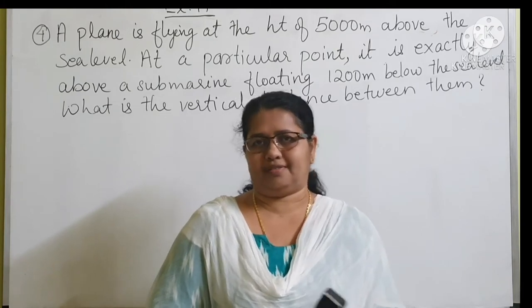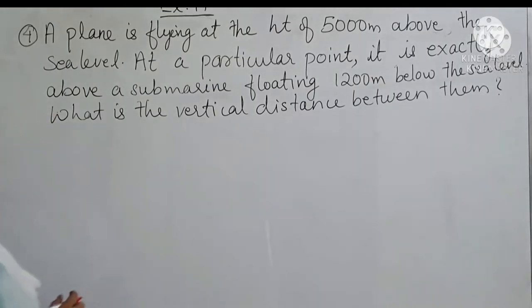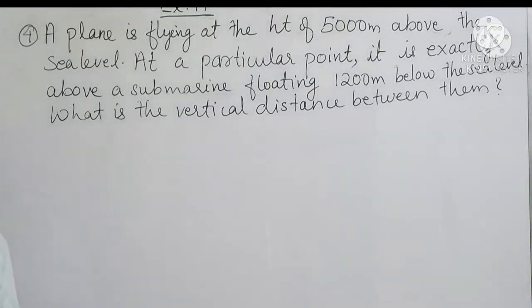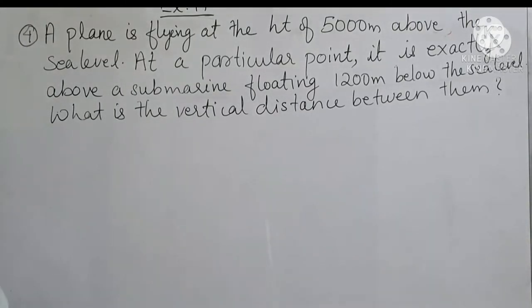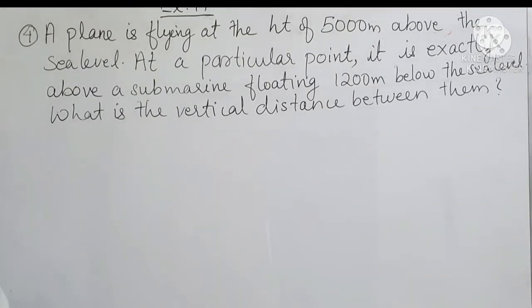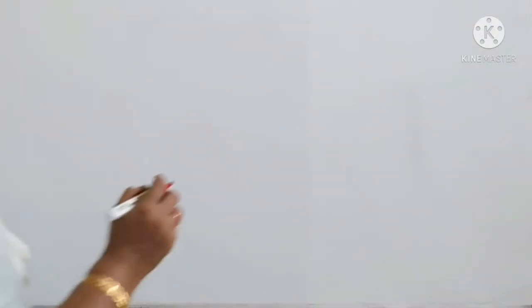The question is: a plane is flying at a height of 5000 meters above the sea level. At a particular point, it is exactly above a submarine floating 1200 meters below the sea level. What is the vertical distance between them?